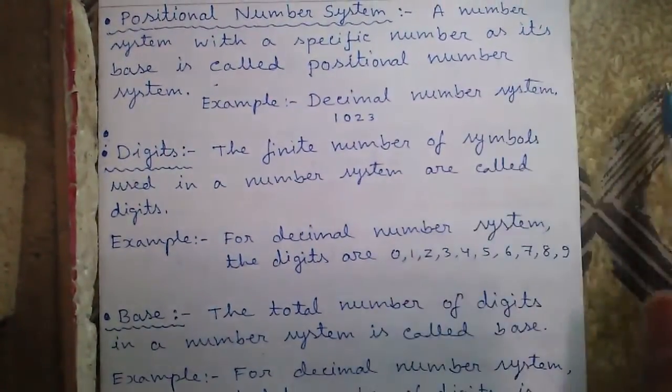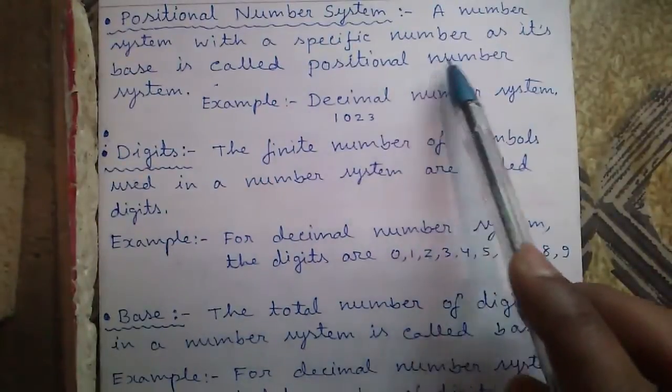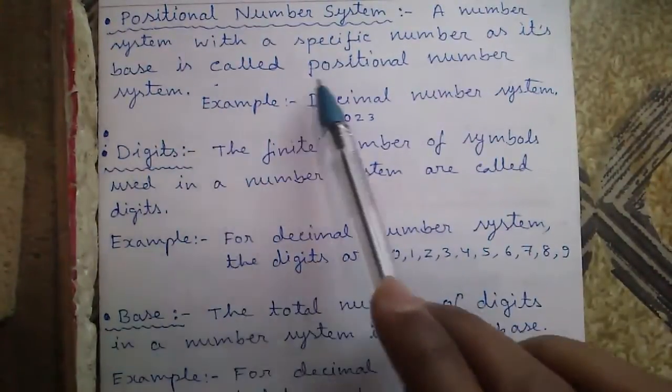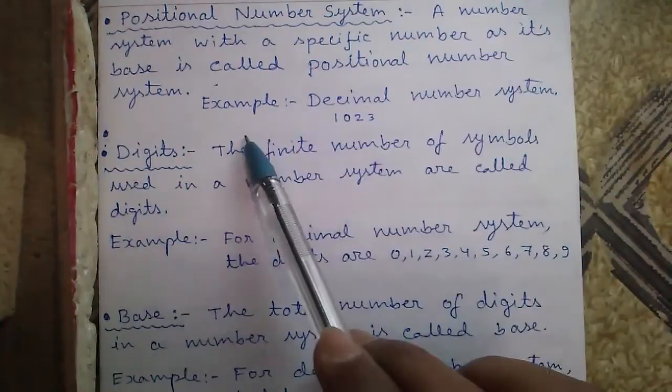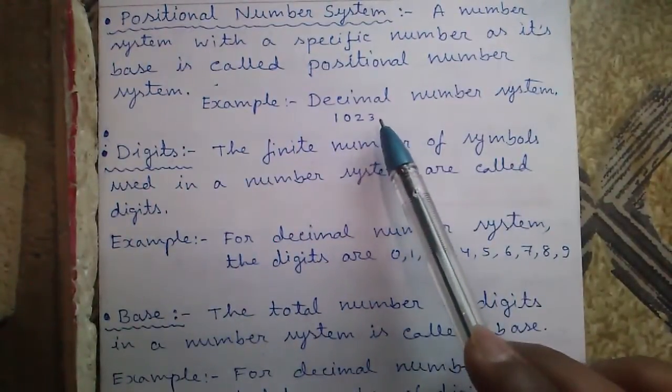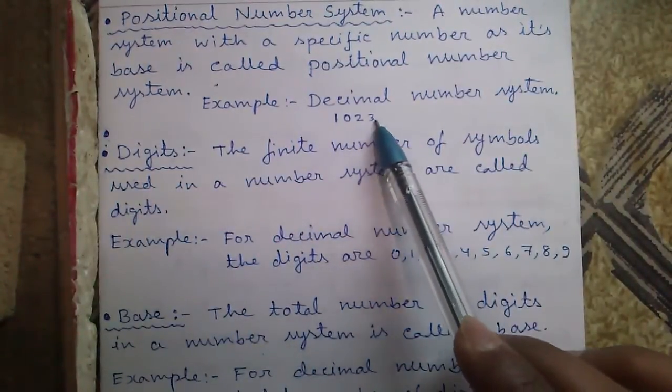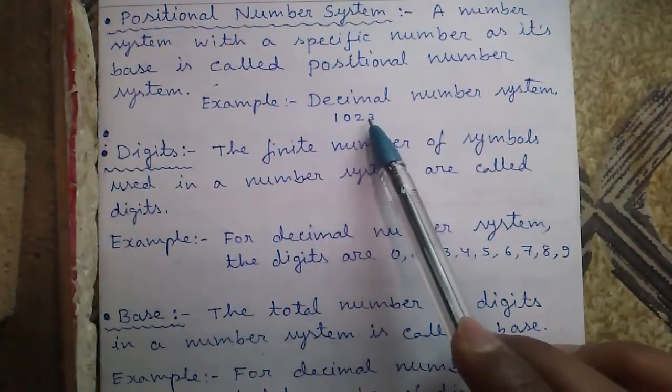Now positional number system. A number system with a specific number as its base is called positional number system. For example, decimal number system. Here in positional number system, the position of each digit represents its value.